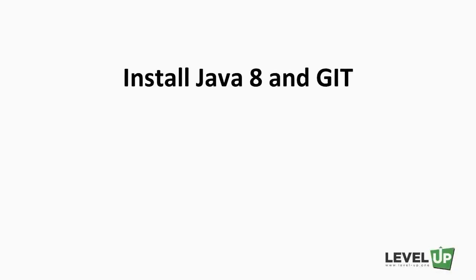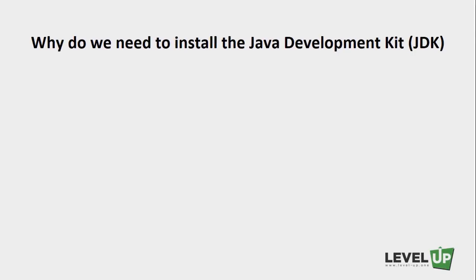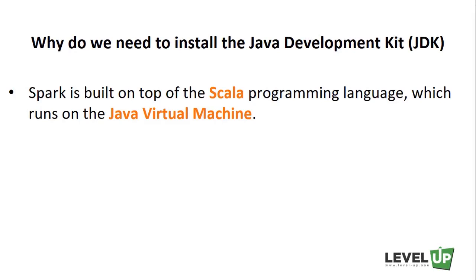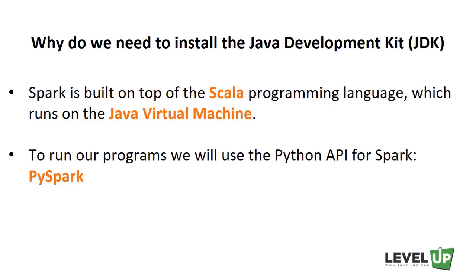We're going to install Java 8 and Git on our local machine so we can fetch our Spark project source code from GitHub and run it locally. We need to install a Java Development Kit because Spark is built on top of the Scala programming language, which runs on the Java Virtual Machine. To run our programs, we'll use the Python API for Spark — PySpark — which is built on top of Spark's Java API.